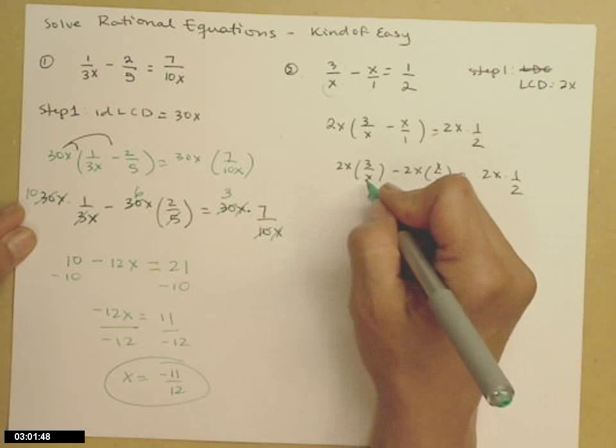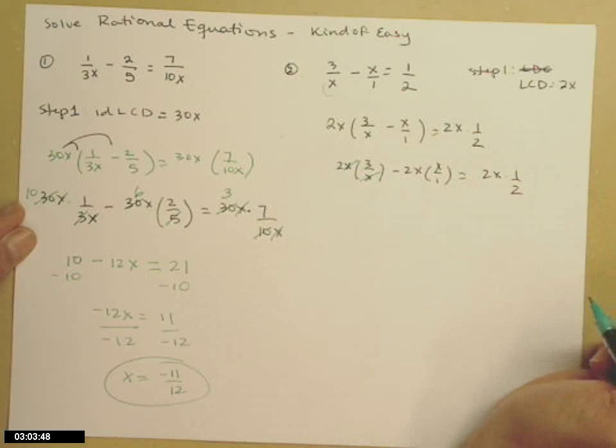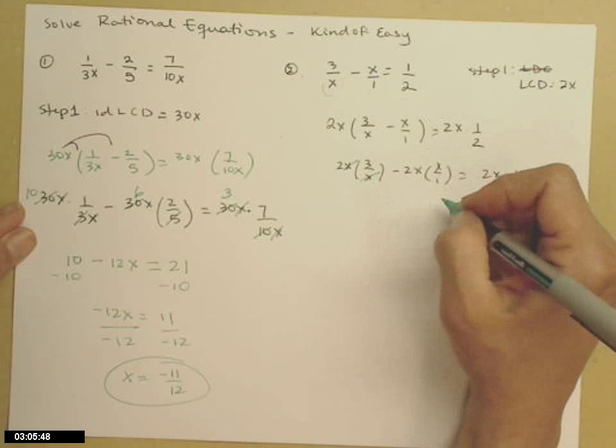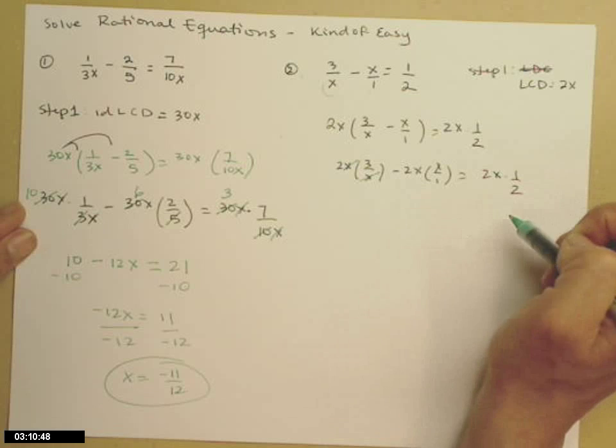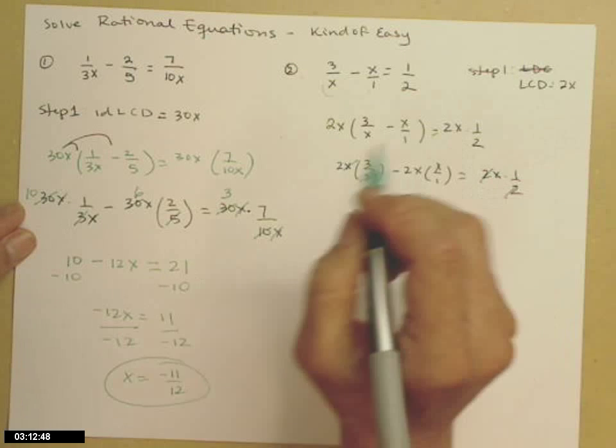Cancel all of those common factors. So the x goes away on that first term. On the second term, notice I don't have any denominators, so nothing cancels. On the right side of the equal sign, the 2's go away.